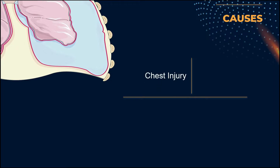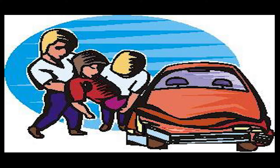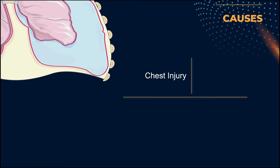Tension pneumothorax can be caused by chest injury. Lung collapse can be caused by any blunt or penetrating chest injury. Some injuries occur as a result of physical attacks such as gunshot, knife wound, or automobile accidents, while others occur as a result of medical procedures that require the insertion of a needle into the chest. Lung disease — lung tissue that has been damaged is more likely to collapse. Many underlying illnesses such as chronic obstructive pulmonary disease, cystic fibrosis, lung cancer, or pneumonia can cause lung damage.